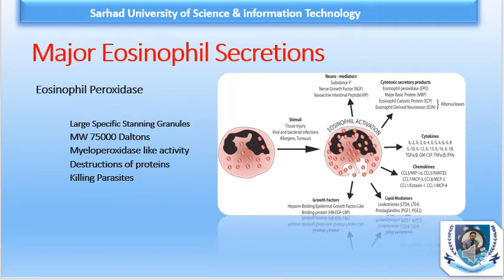Another major eosinophilic secretion is Eosinophil Peroxidase. This enzyme is found mainly in the matrix of large specific granules. It is a fairly large protein with a high molecular weight of 75,000 daltons. Its function is similar to that of myeloperoxidase (MPO) present in neutrophil, and it plays a major role in the destruction of protein, thus assisting in killing parasites.